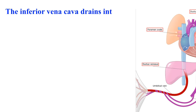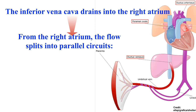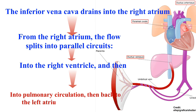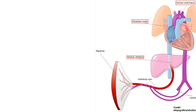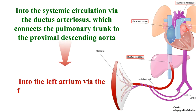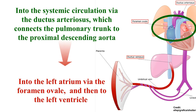The inferior vena cava drains into the right atrium. From the right atrium, the flow splits into parallel circuits: into the right ventricle and then into pulmonary circulation, then back to the left atrium and left ventricle into the systemic circulation via the ductus arteriosus, which connects the pulmonary trunk to the proximal descending aorta. Into the left atrium via the foramen ovale, and then to the left ventricle — this is mainly IVC blood, directed there by the Eustachian valve.